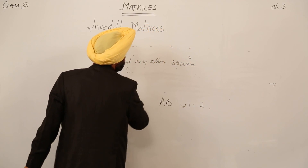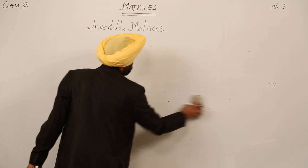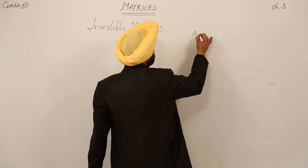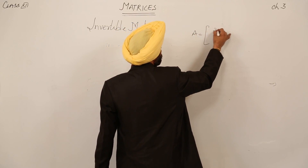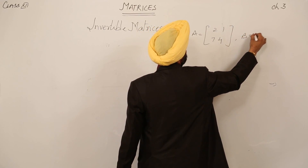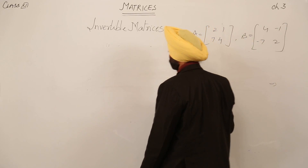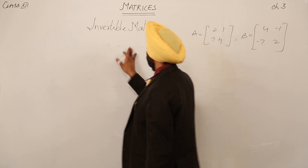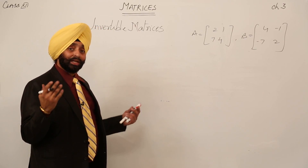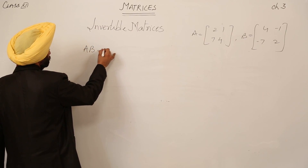Suppose we are having A and B, two square matrices of order two by two. Let A equal to the matrix [2, 1; 7, 4] and B equal to the matrix [4, -1; -7, 2]. Now let's check what the result of A times B is.